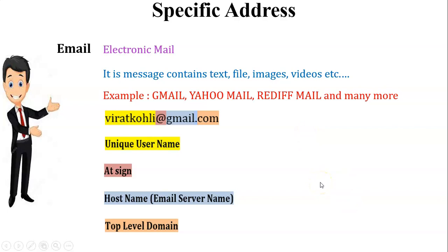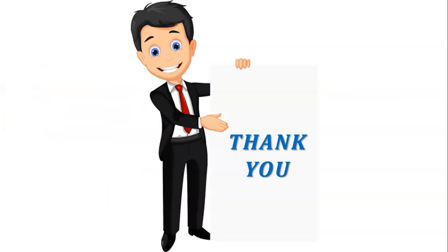So there are two types of specific addresses used in the network: the first one is URL and the second one is email. Thank you for watching this video.